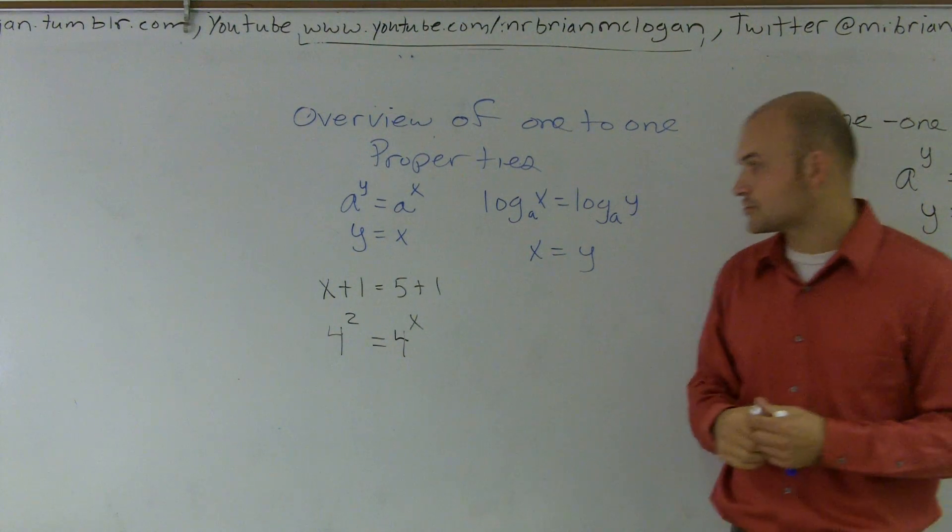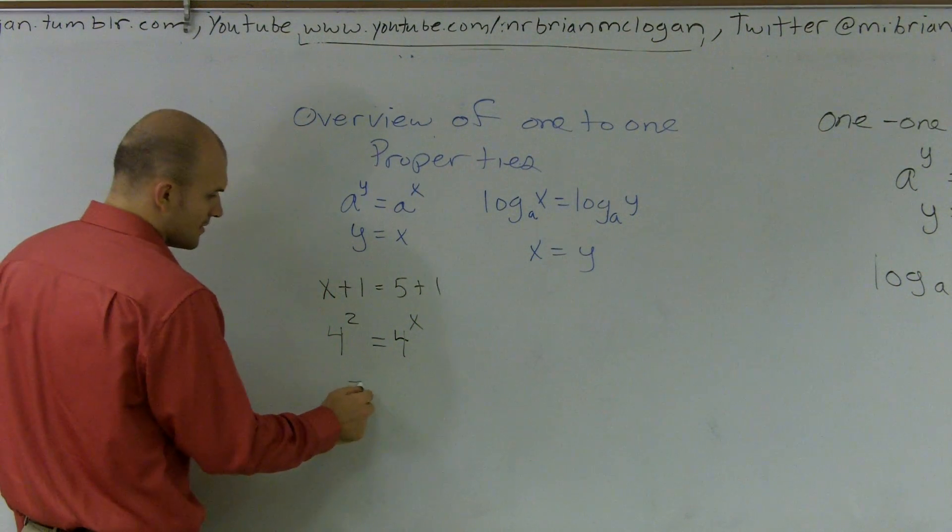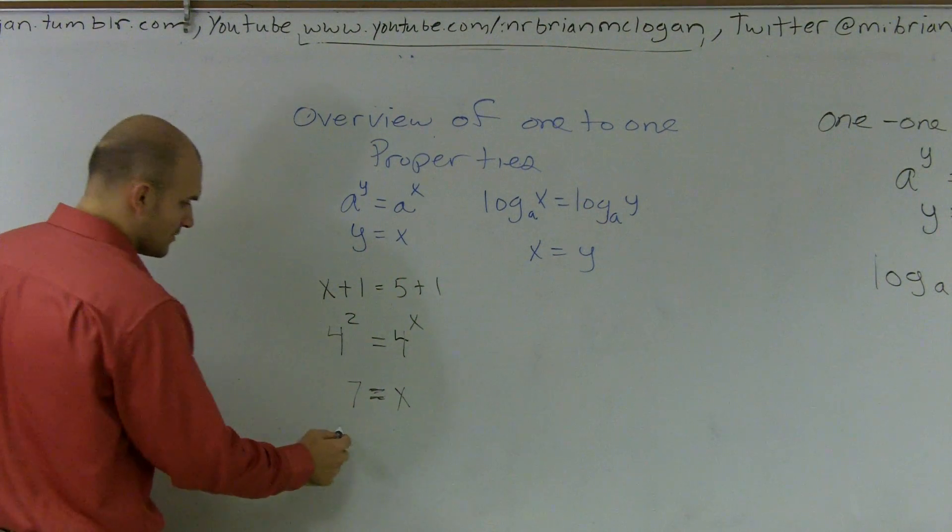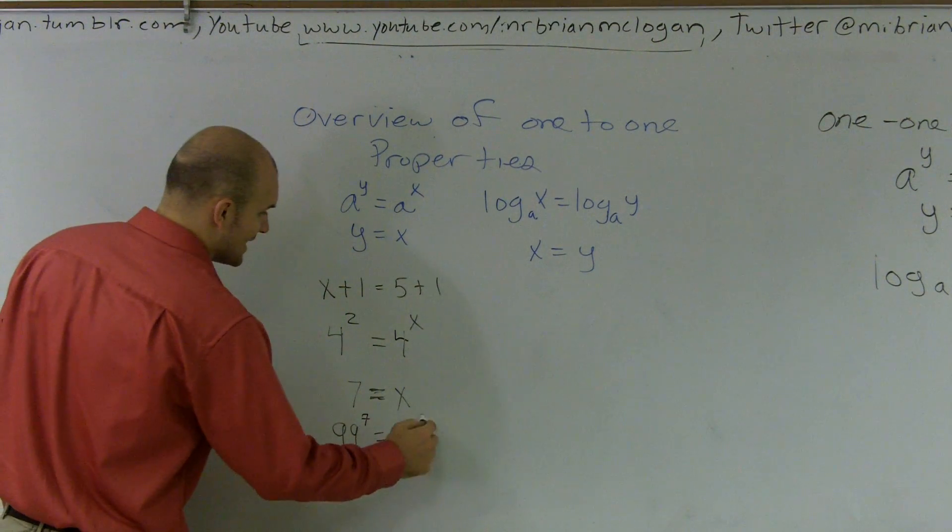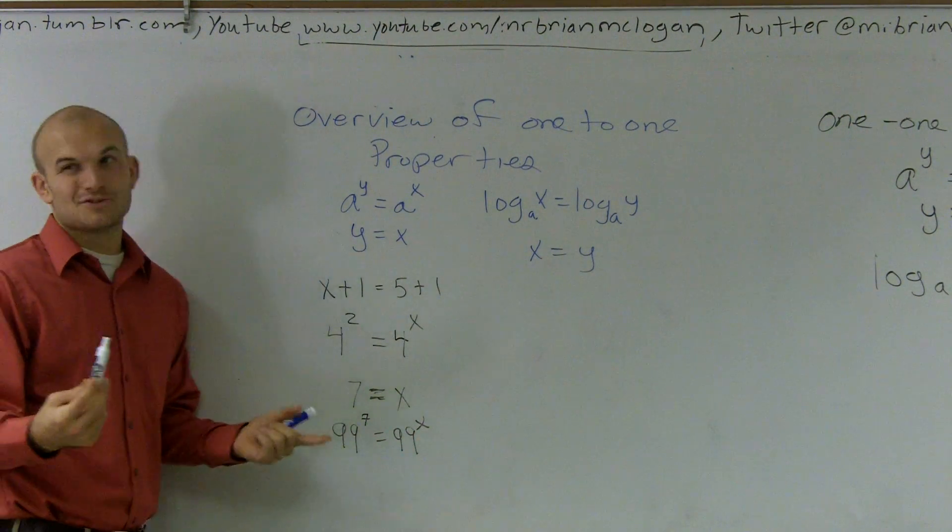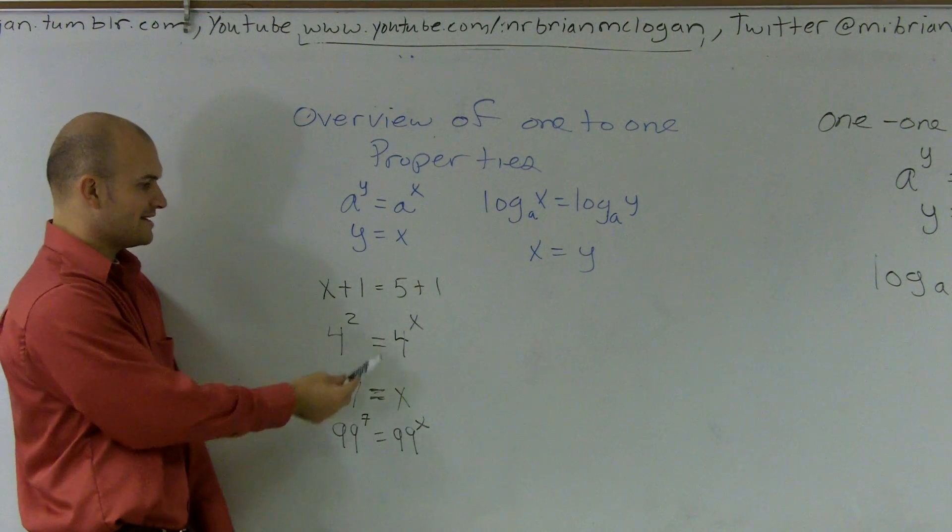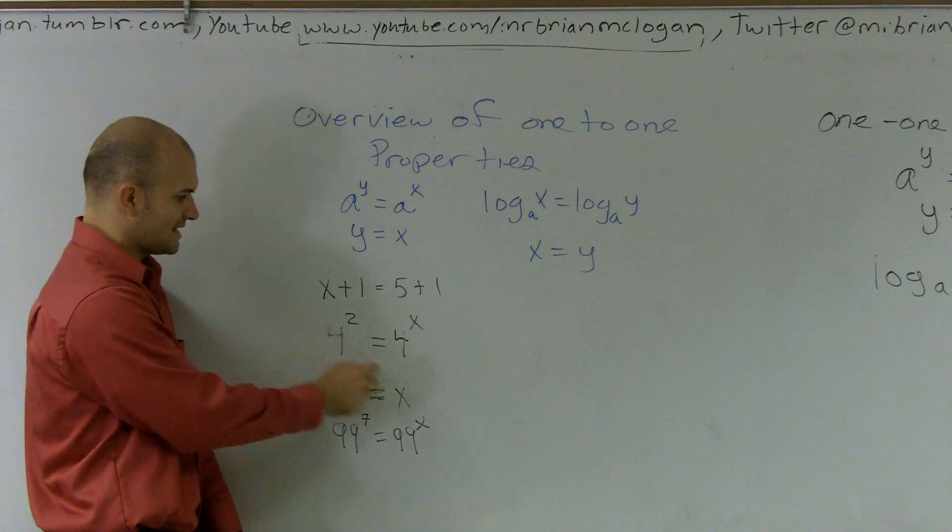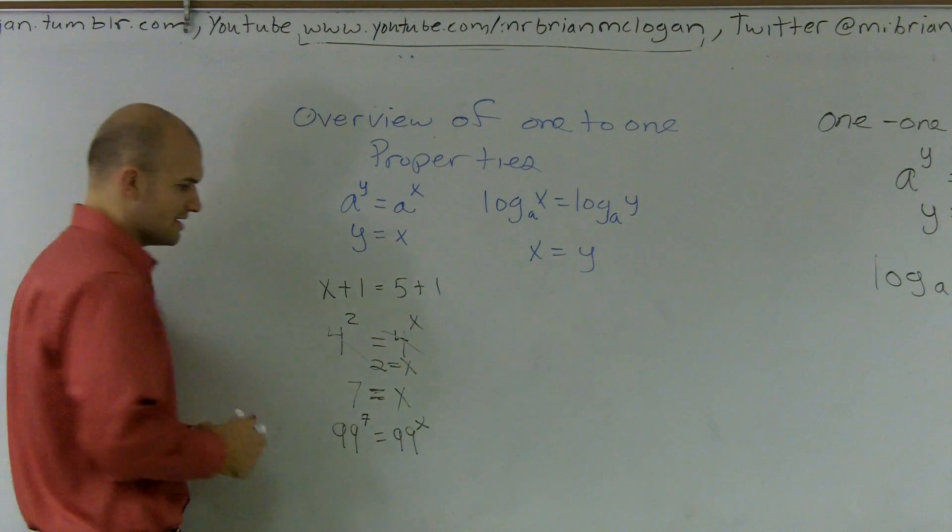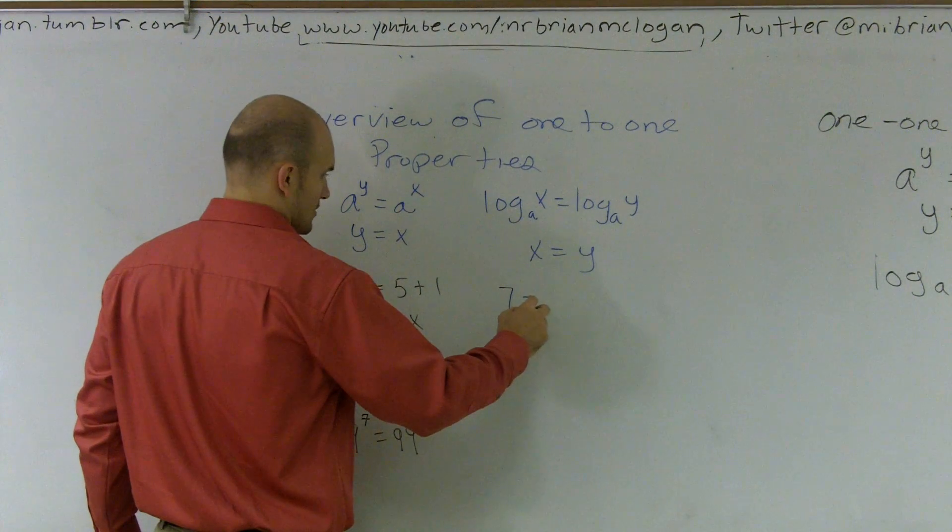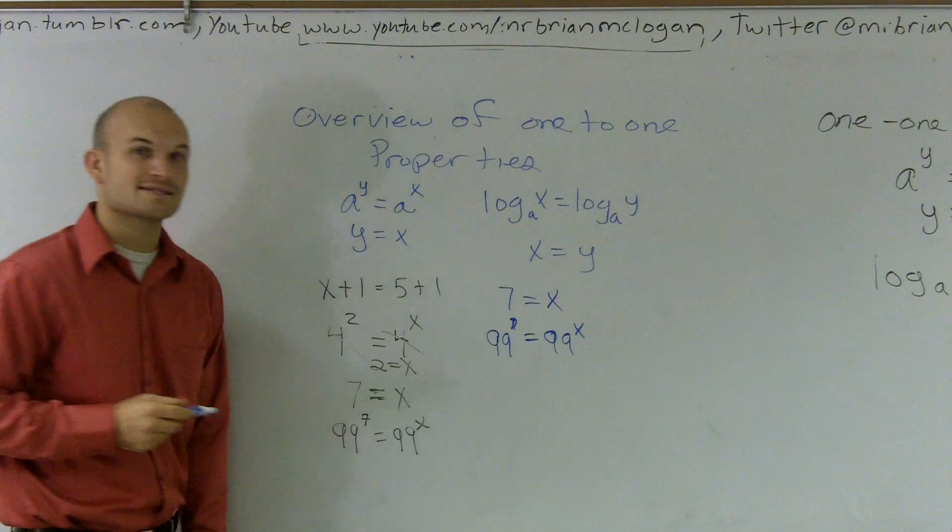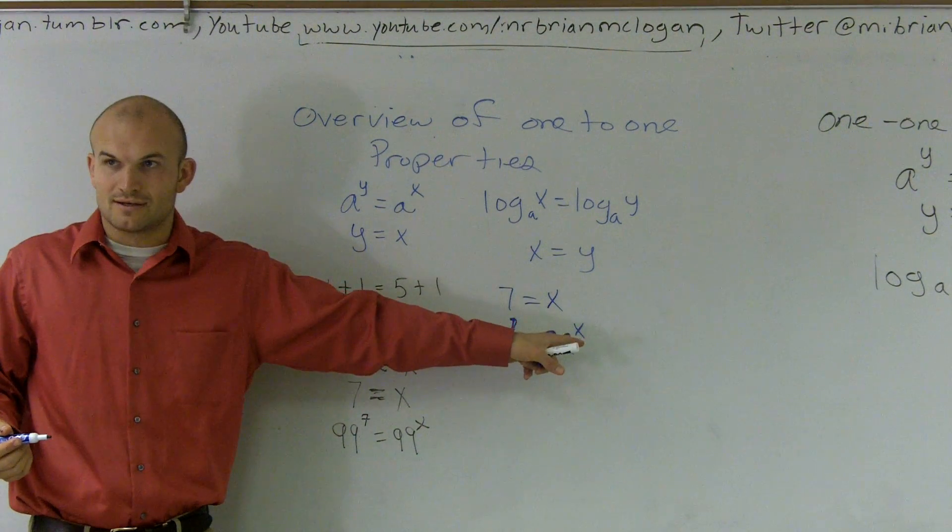Whenever you have a number that the base is raised to a number, and you have that same base raised to something else, what you can say is these two numbers have to be equal to each other. Does that make sense? So the same thing is true for this. Let's say I just give you a random answer, I say seven is equal to x. Well, if I say seven is equal to x, I can say this as well: 99 to the seventh is equal to 99 to the x.